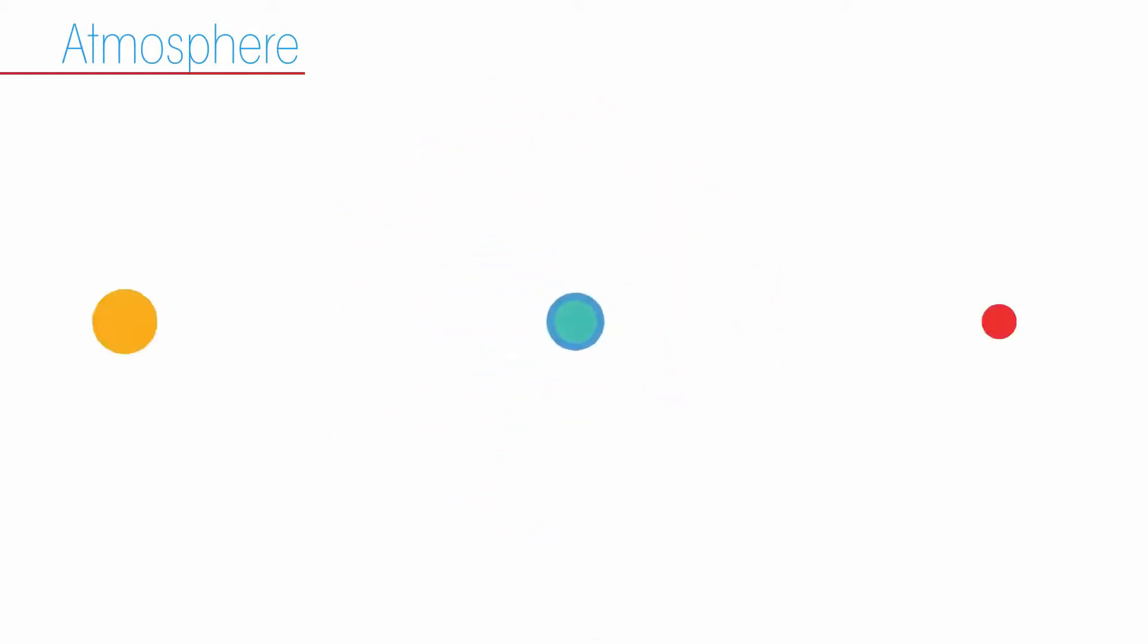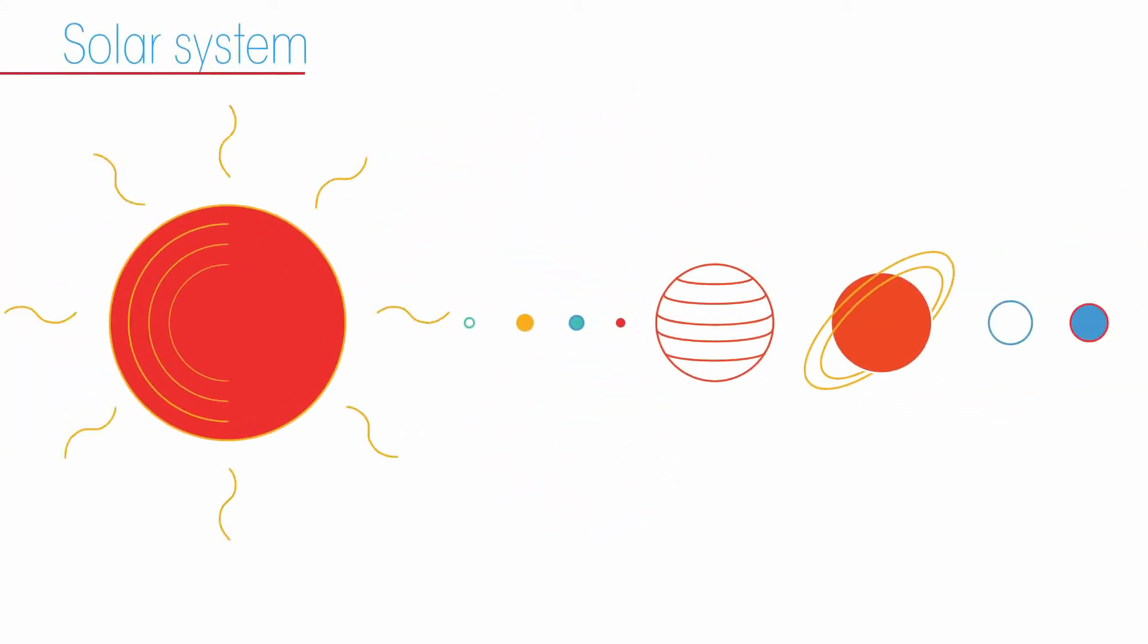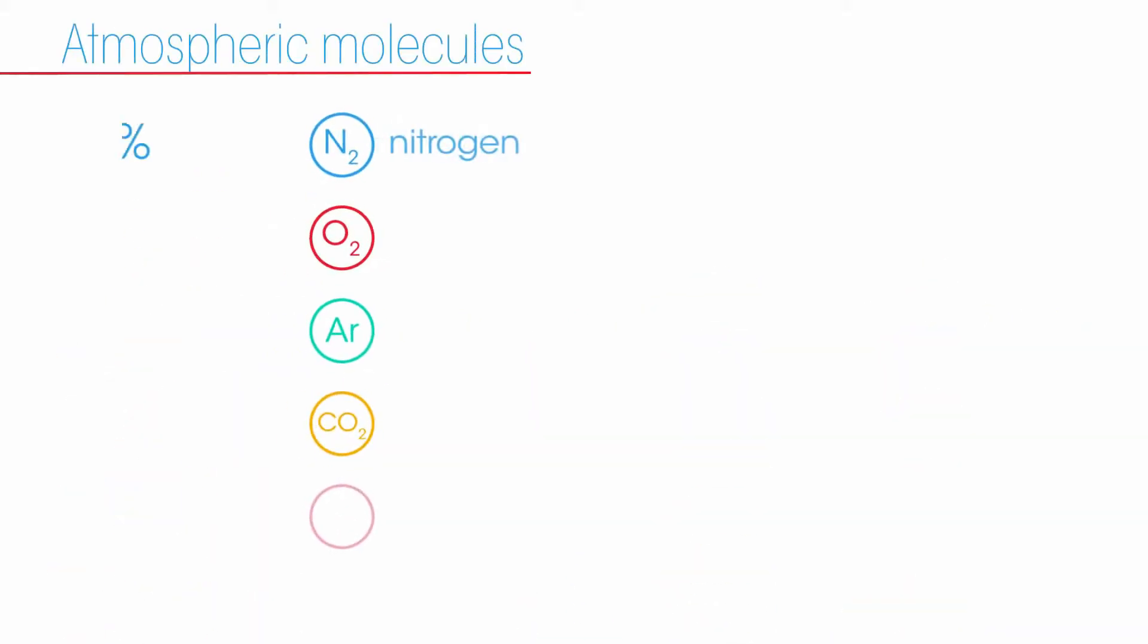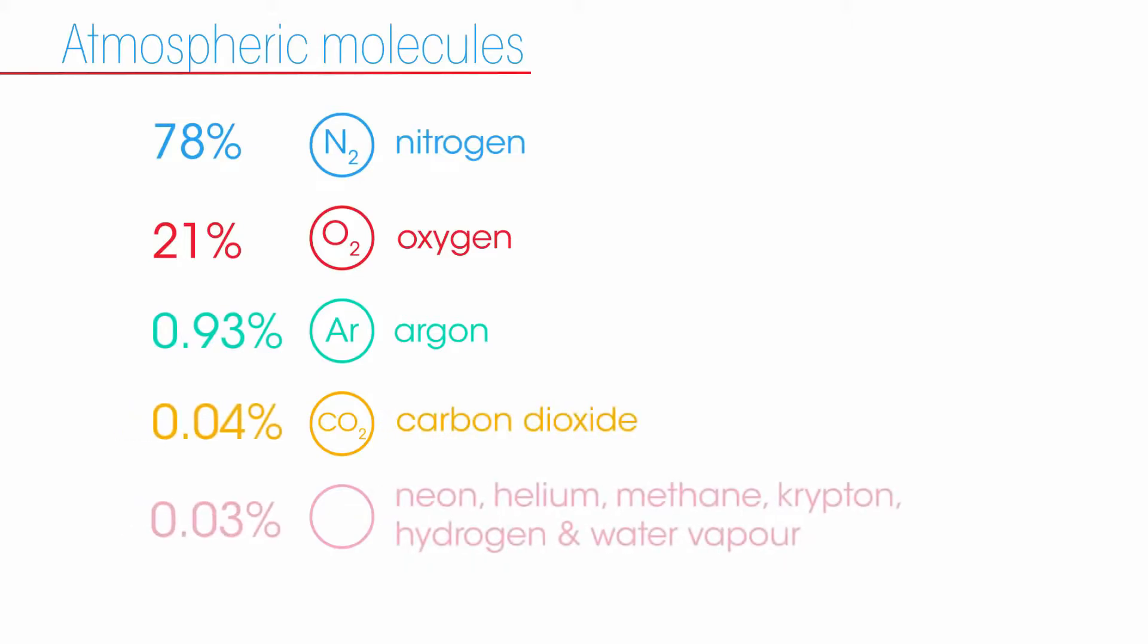In fact, it's the only planet in our solar system with an atmosphere that can sustain life and is composed of a mixture of different molecules, including mostly nitrogen, the oxygen that we breathe, argon, and then carbon dioxide and other molecules in tiny concentrations, including water vapour.